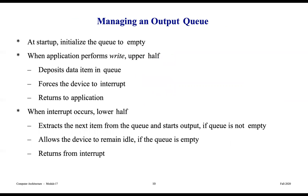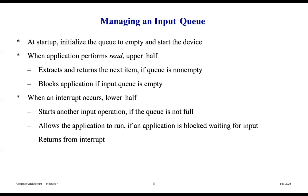Managing an output queue: at startup, initialize the queue to empty. When an application performs a write in the upper half, it deposits a data item in the queue, forces the device to interrupt, and returns to the application. When an interrupt occurs in the lower half, it extracts the next item from the queue and starts output if the queue is not empty, or allows the device to remain idle if the queue is empty, then returns from interrupt.